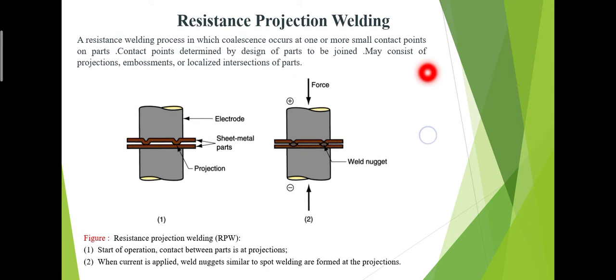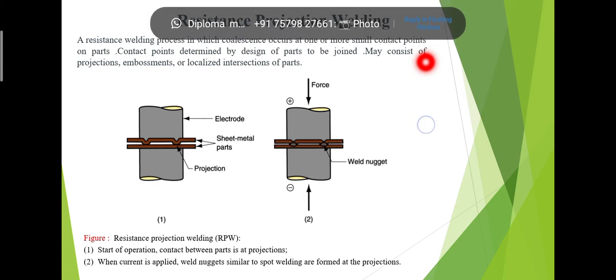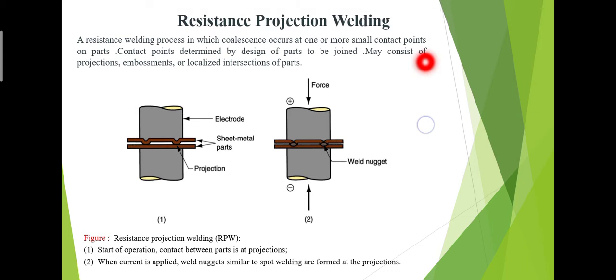If we compare with spot welding, depending on the surface of the work pieces to be welded, projections are small deformations that will touch the surface of the work pieces to be welded together.